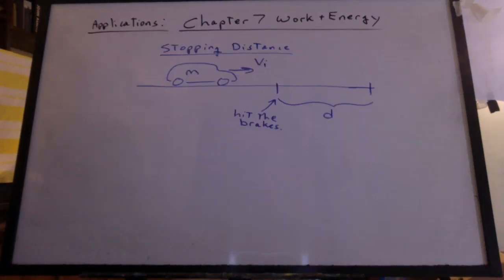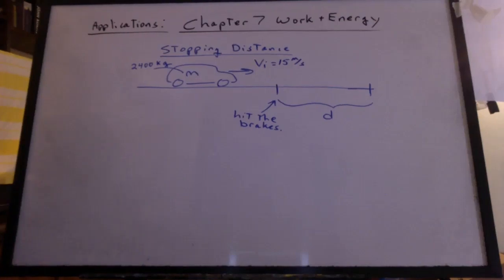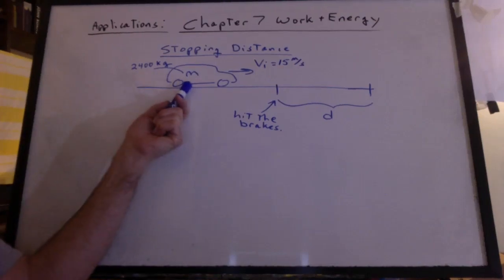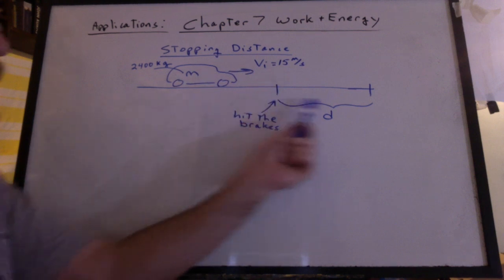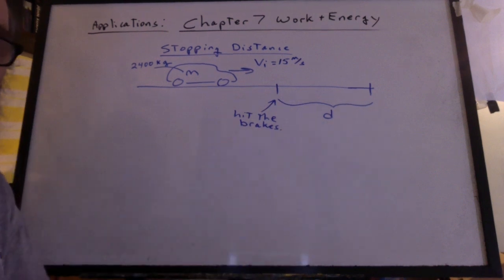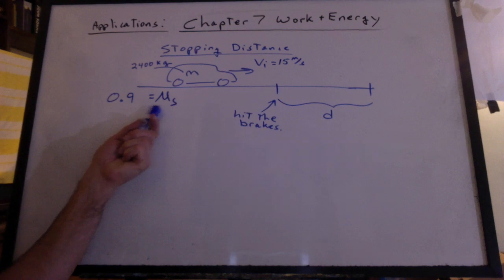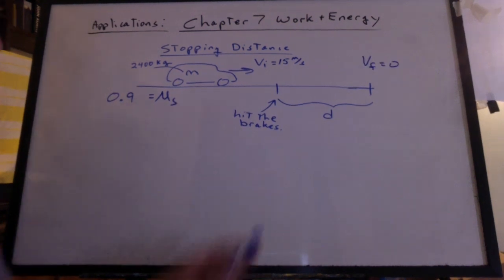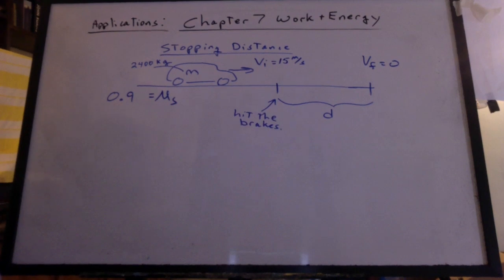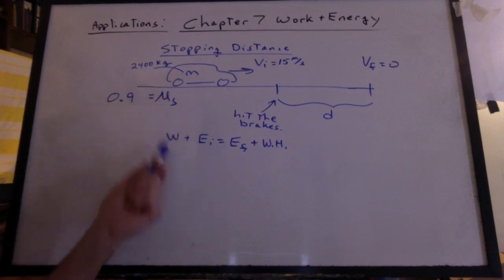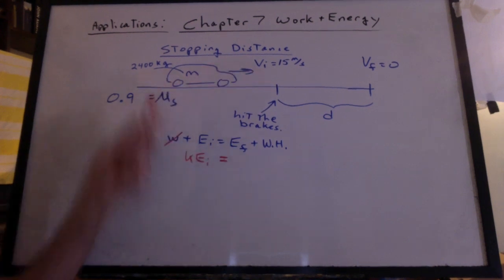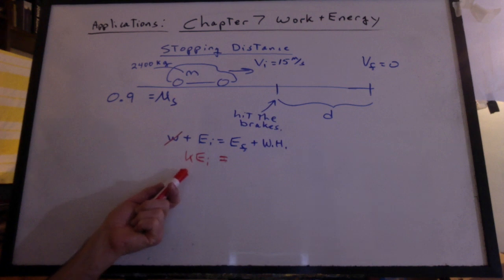Here's another great application. Stopping distance for a car. Pay attention. It could be you in the car. We've got a car with 2,400-kilogram mass, moving initially at 15 meters per second. All of a sudden, you've got to slam on the brakes. How quickly can you stop without skidding? Well, if we're not going to skid, we need to know the mu s. Let's make it 0.9. Everybody should understand that the final velocity is going to be zero. We can start with our full energy statement. Am I doing any work to this object? No. Does it have any kinetic energy initially? Yeah, it's got a velocity. It's got a mass. Does it have any potential energy initially? No, it does not.